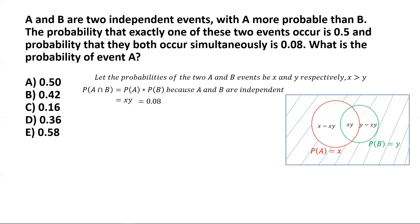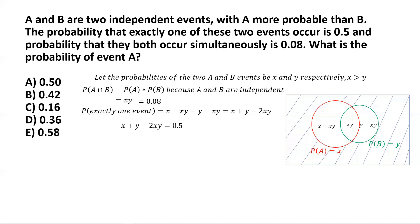Now we can find the probability that exactly one of the two events occurs. That is simply the sum of (X minus XY) and (Y minus XY) — the probability of A occurring alone plus the probability of B occurring alone. Summing these gives X plus Y minus 2XY, which equals 0.5.